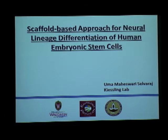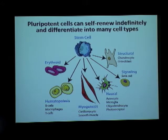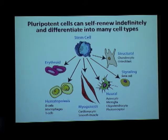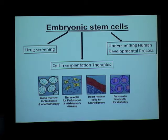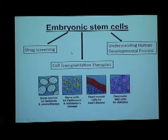Embryonic stem cells are basically pluripotent in nature, which means they can self-renew indefinitely and they can become into any type of cell — such as erythroids, cardiomyocytes, or neural cells. So they are basically a limitless supply of cells. They can be used for screening various kinds of drugs, and you can understand the human development process. But the most important application comes in cell transplantation therapy.